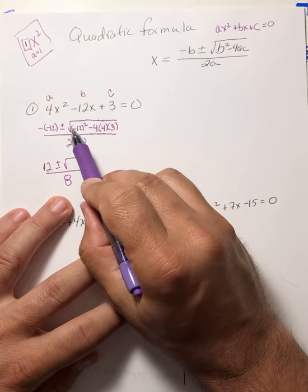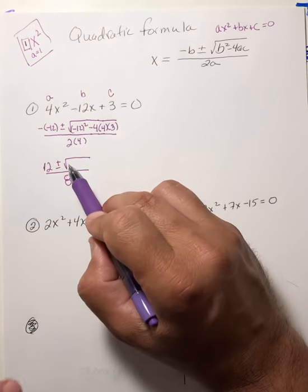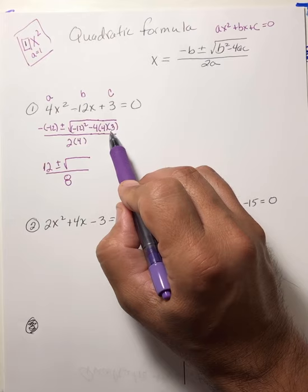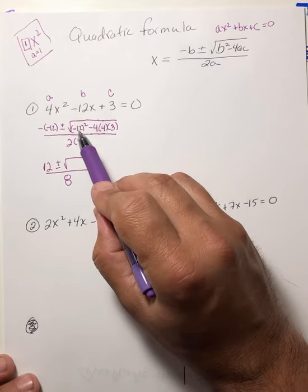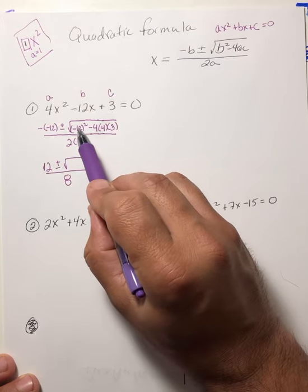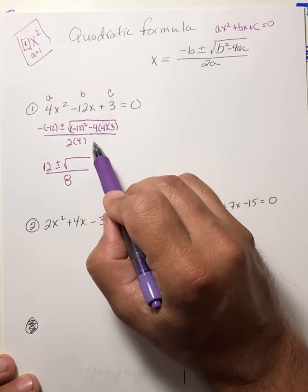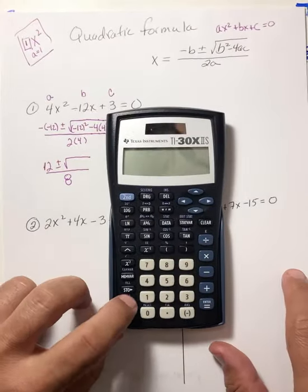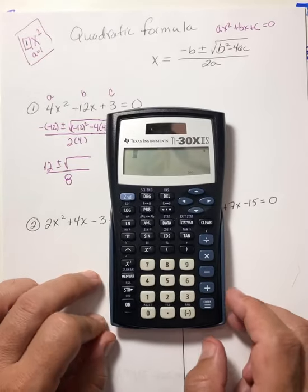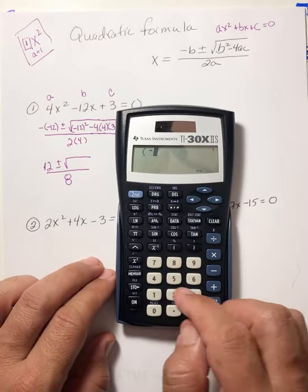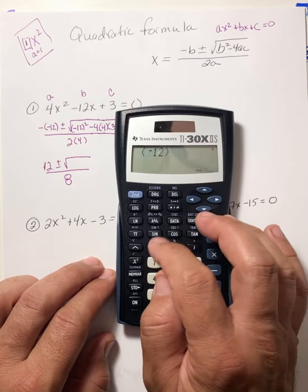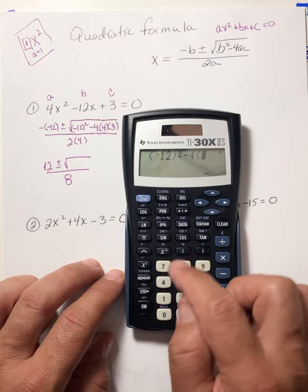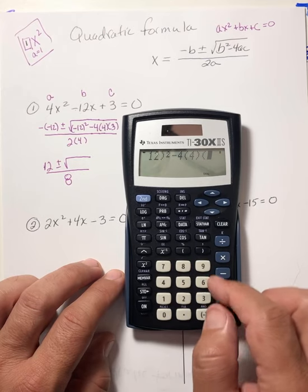Now for this part, use your calculator. Do not type in the radical bar — notice I have a radical bar right here. Because not all of these answers are going to be perfect squares; you're going to have decimals. So just write your square root symbol down and start typing into your calculator: parentheses, negative 12 squared, minus 4 times 4 times 3. I'll do that right now. So parentheses, negative 12, close parentheses, squared, minus 4, parentheses 4, parentheses 3. That equals 96.